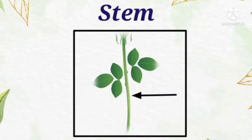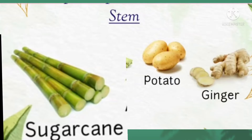Stem. Stem carries food and water to different parts of a plant. Dear children, this we have already read in a previous session. Now let's see what we intake as a part of the plant that is stem. Sugar cane, potato, and ginger are the basic foods that we intake as a part of stem.